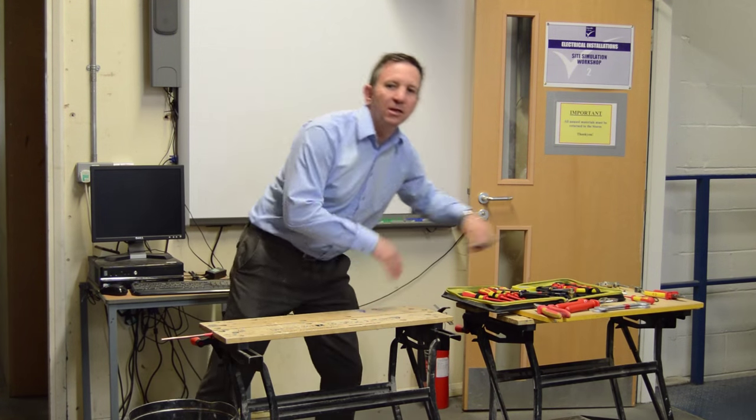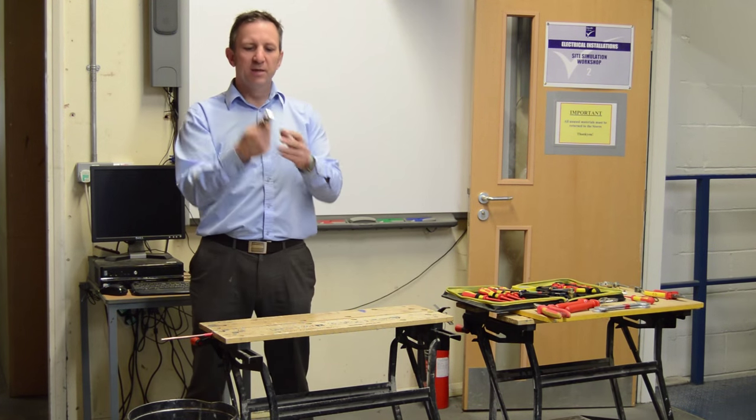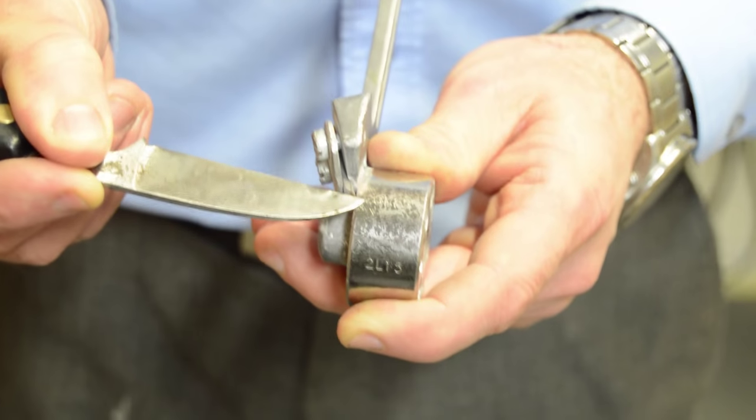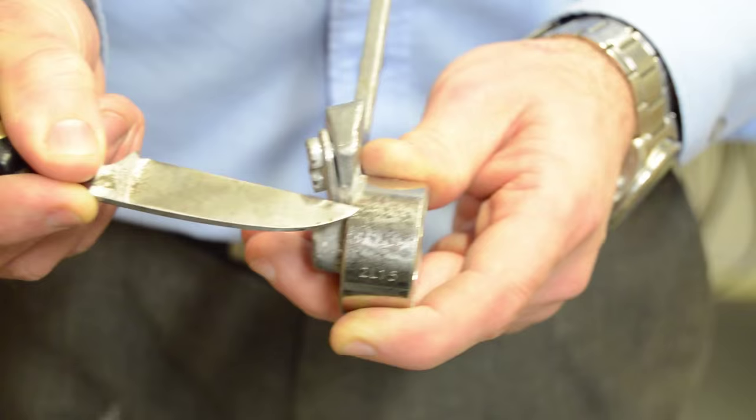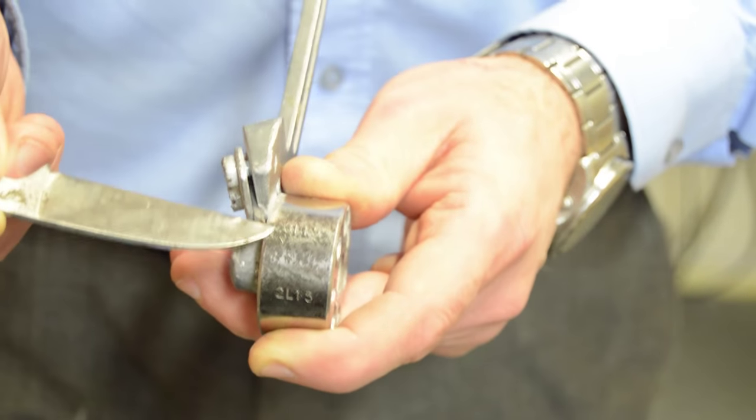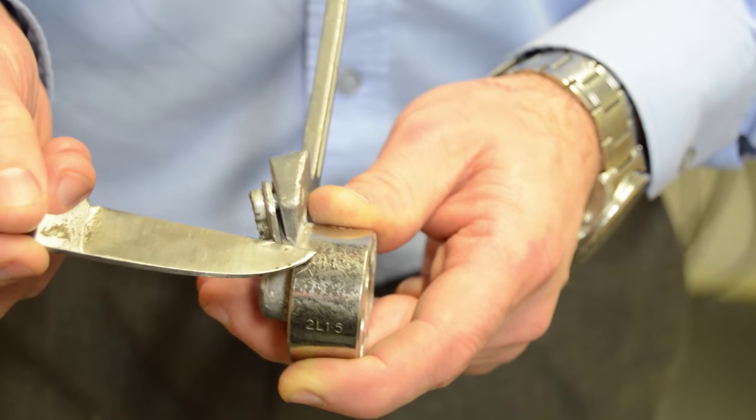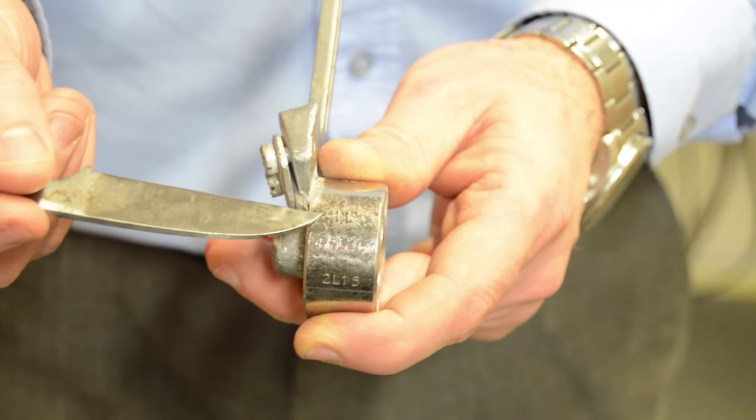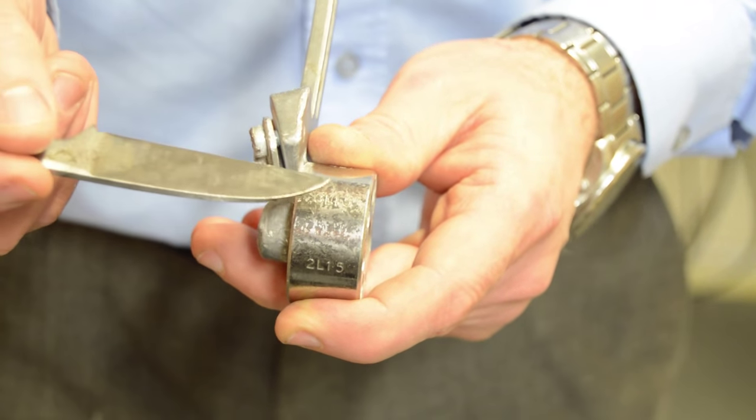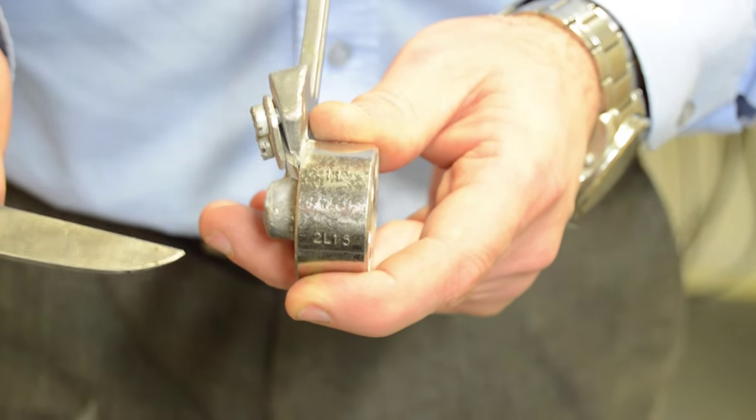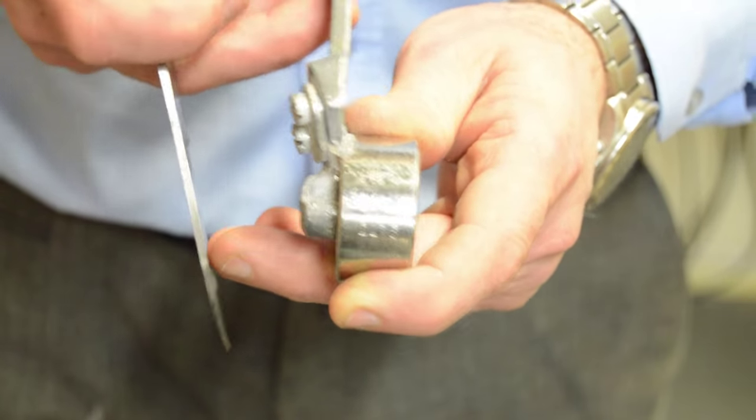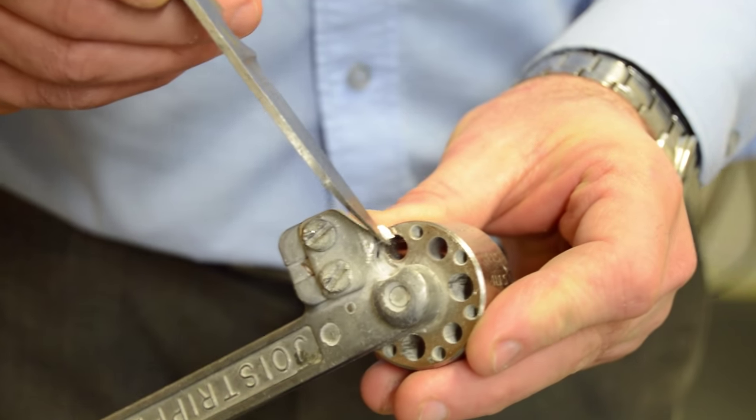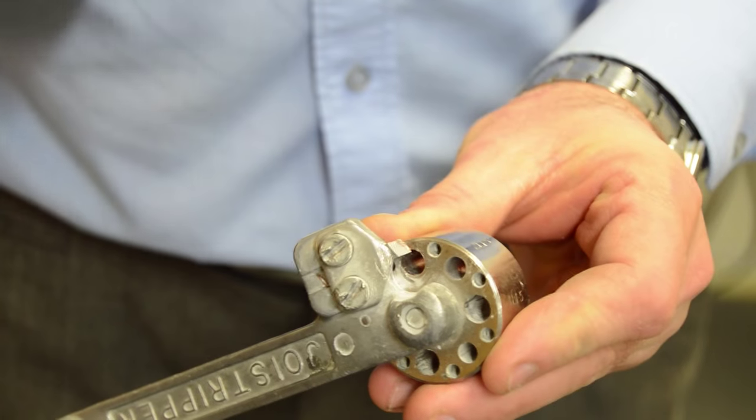We're then going to get our joystick. Now the joystick must be set on the correct setting. On our joystick which we're going to use to remove the outer sheath, you can see there it's set to 3L 1.5. What that stands for is 3 core light gauge 1.5mm cross sectional area cable. Now check that's in the right position. You make sure that your blade is in the hole opposite the corresponding cross.